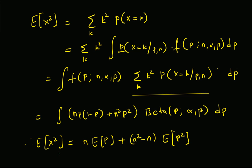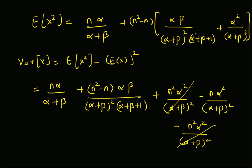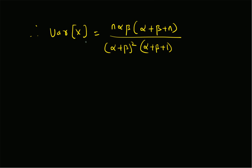We found E[X²] = n·E[p] + (n²-n)·E[p²], and by substituting the mean and second moment of the beta distribution, we obtained the final expression. After evaluating five fractional terms and performing simple algebra, the variance of the beta binomial random variable is confirmed to be n·α·β·(α+β+n) / [(α+β)²·(α+β+1)]. Thanks for watching.